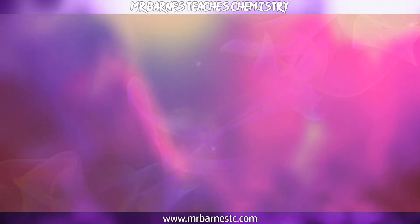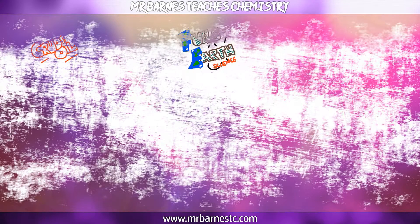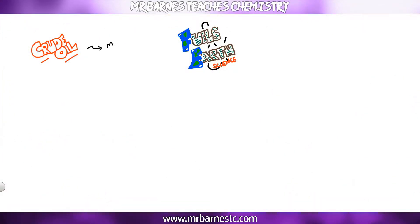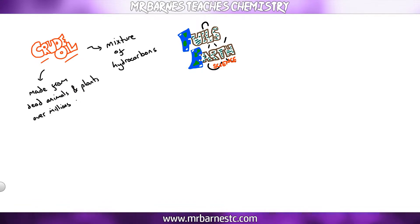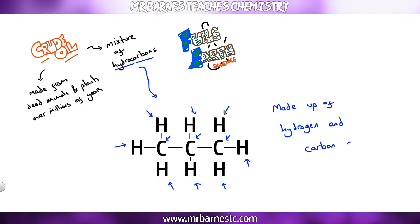The first thing we're going to have a look at is crude oil. A definition: crude oil is a mixture of hydrocarbons and it's made up from dead animals and plants over millions of years. A hydrocarbon, as you can see from my diagram here, is something made up of hydrogen and carbon only.